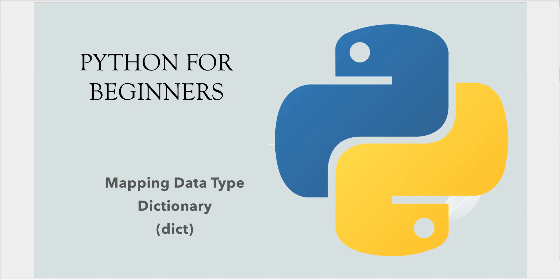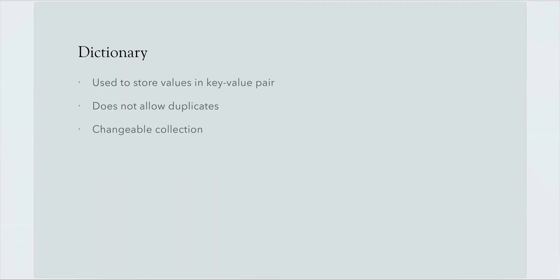Welcome back. Today we will learn about dictionary, which is a mapping data type in Python. A dictionary is used to store key-value pairs. It doesn't allow duplicates because the key has to be a unique key, and that's how the mapping will be done between key and value. Dictionary is a changeable collection, meaning we can add and remove items even after the dictionary has been created.